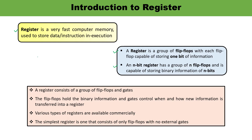A register consists of a group of flip-flops and gates. The flip-flops are used to store or hold the binary information, while gates are used to control how and when new information is transferred into a register. Various types of registers are available for commercial purposes. The simplest example of a register consists of only flip-flops with no external gates.